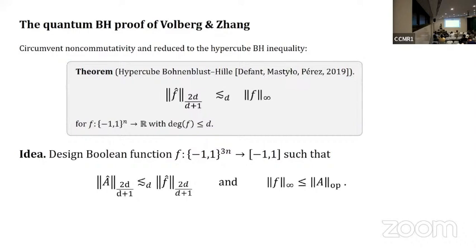The idea is to design a Boolean function F on three N variables such that two things hold. First, we can relate the L^p norm of the coefficients of our operator A to the L^p norm of Fourier coefficients of F, and two, we can control the supremum norm of F by the operator norm of A. If we have both properties, we can have the following string of inequalities: control L^p norm of A by L^p norm of coefficients of F, use the hypercube Bohnenblust-Hille inequality, and then control the supremum norm of F by our operator norm of A.